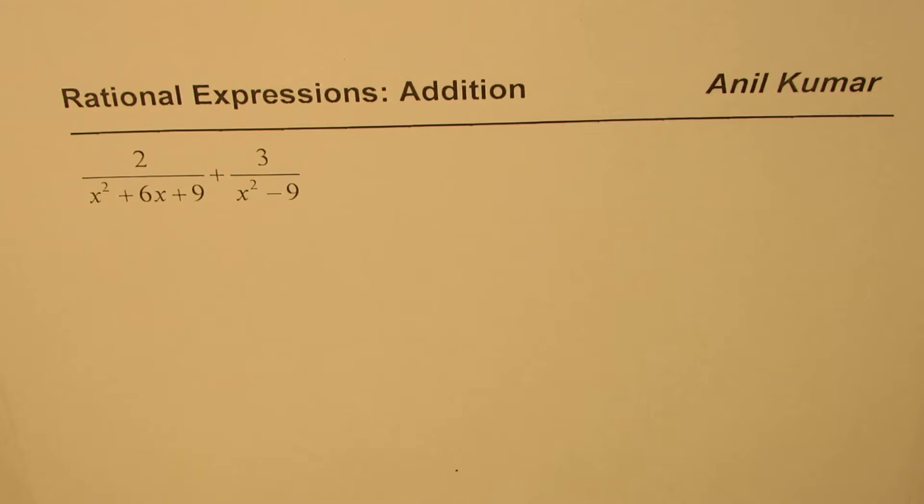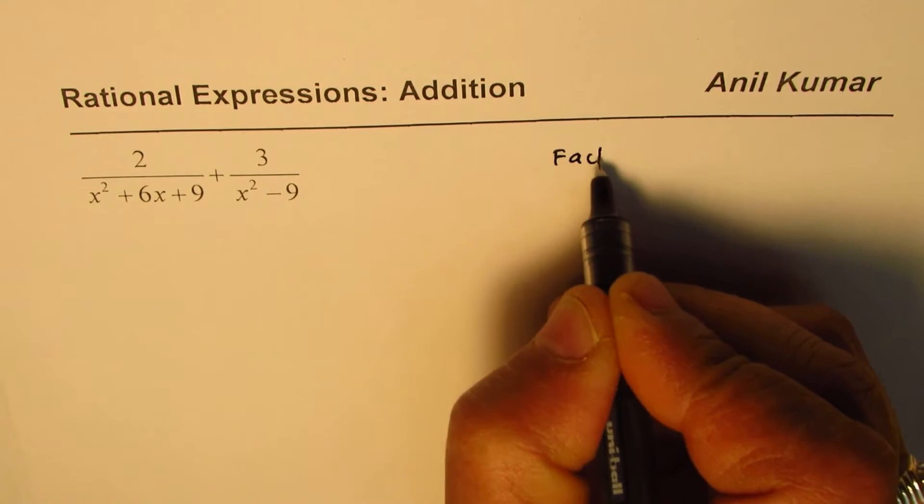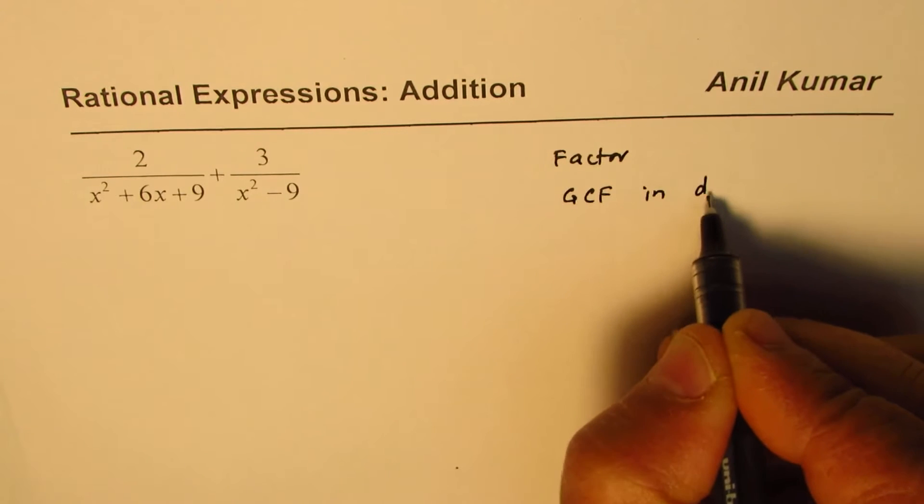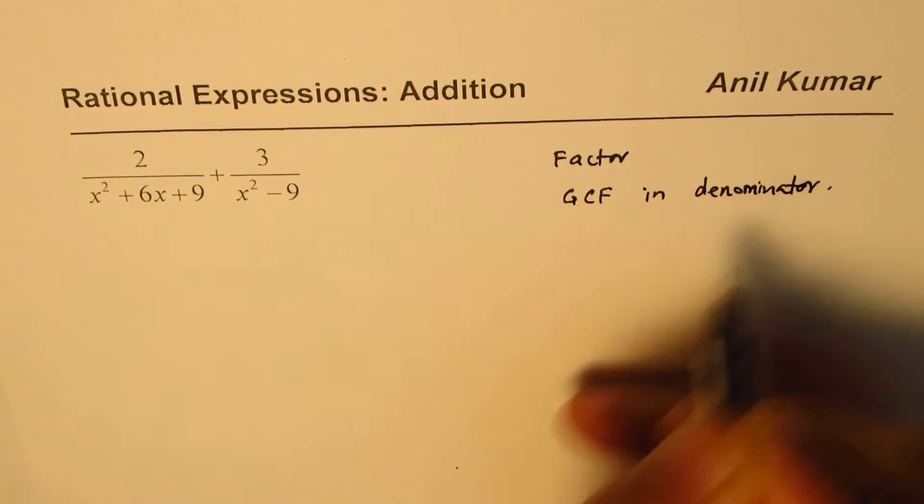You can pause the video, answer, and then look into my suggestions. To add, we need to factor and then find greatest common factor in denominator. These are the first two steps.